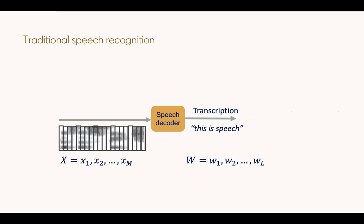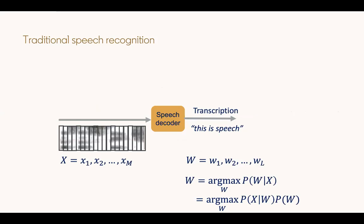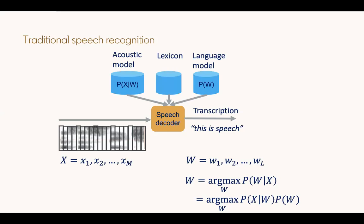In a traditional speech recognition system, we have a speech decoder that takes the input speech spectral features and outputs the sequence of words. It basically tries to maximize the probability of a word sequence given the input spectral sequence. That is done using Bayes' rule to convert p(w|x) — the probability of words given acoustic features — into a conditional likelihood p(x|w) times the prior probability of the words p(w). This brings us to the different components of a traditional speech recognition system: p(x|w) is modeled by the acoustic model, and p(w) is modeled by the language model.